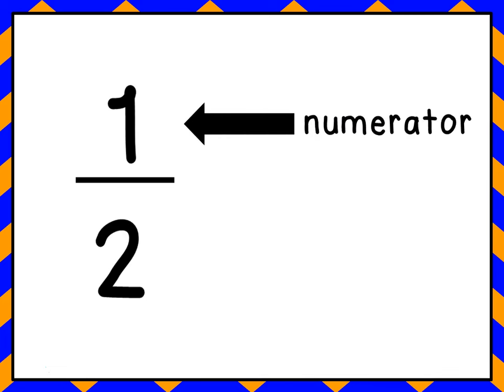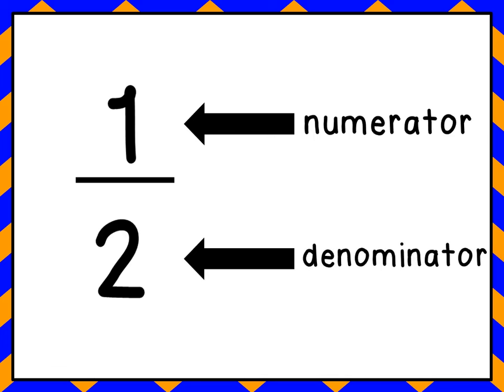As you can see, the numerator is the top part — it tells you just the parts you're looking at — and the denominator is the bottom part of the fraction, and it tells you how many pieces you have all together. So in this particular fraction, one half, we have one piece that we're looking at, and we have two pieces all together.